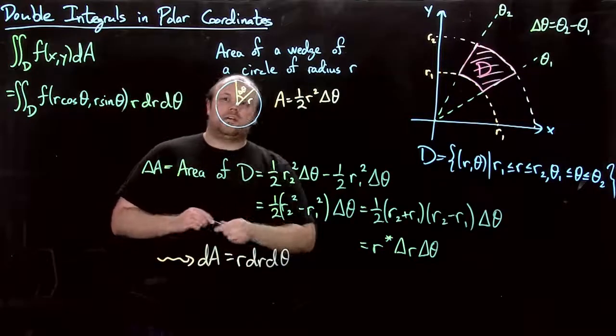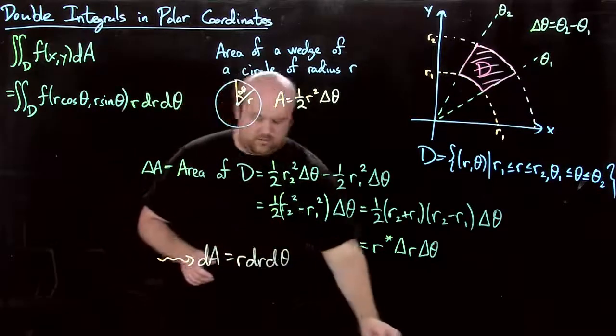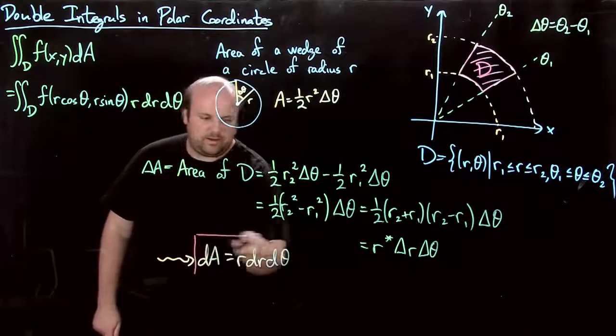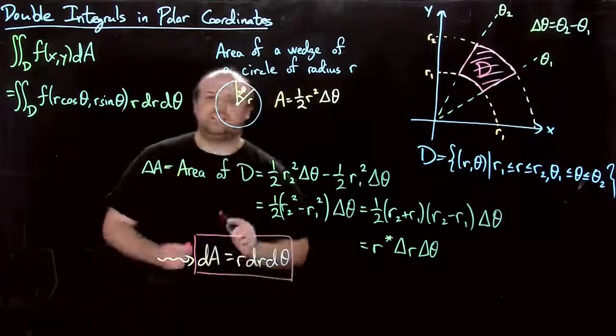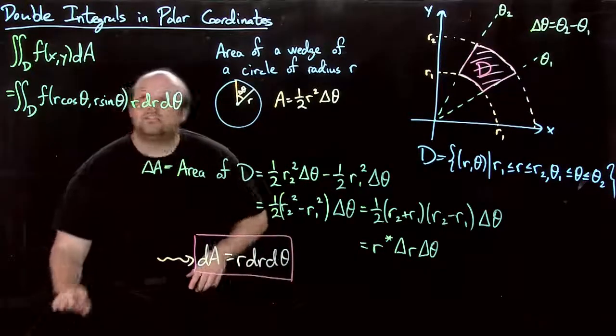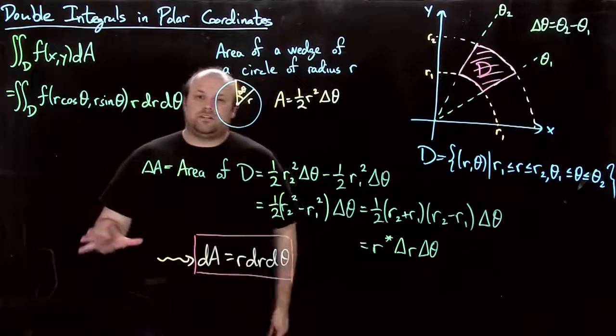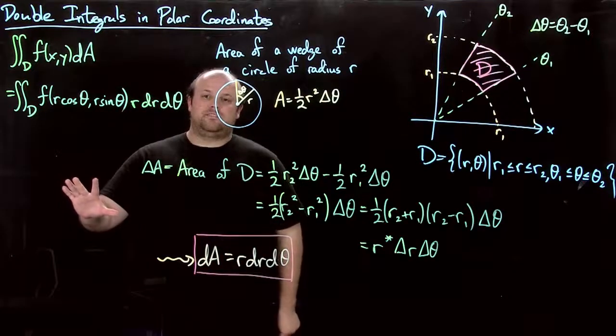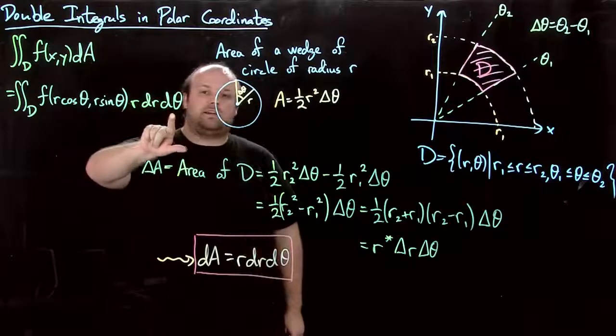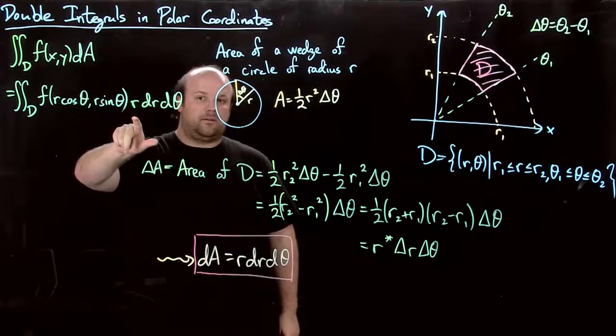So that's the most important part of polar coordinates in double integrals, is this formula right here. dA is r dr d theta. So when you switch from Cartesian coordinates from x, y coordinates to polar, you get dr d theta, but don't forget the r.